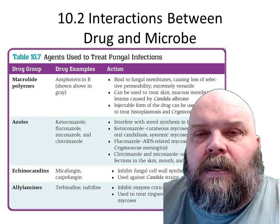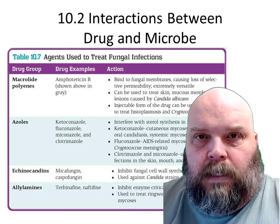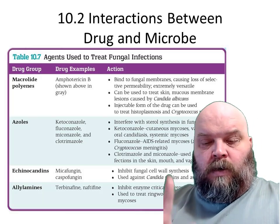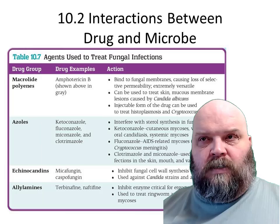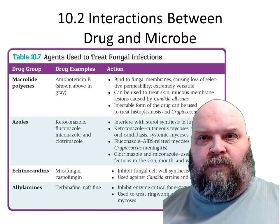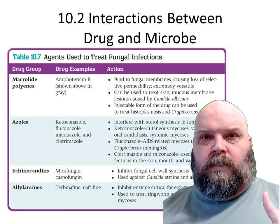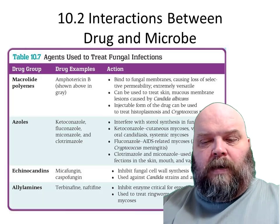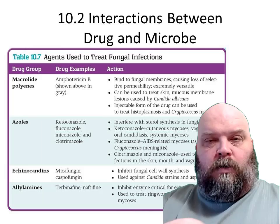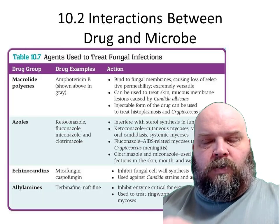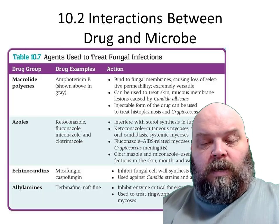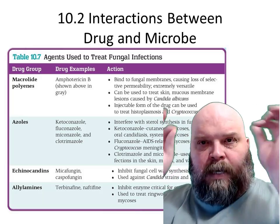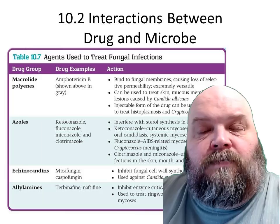Amphotericin B is topical only. So if you have a fungal skin infection — whether it's athlete's foot, crotch rot, whatever — Amphotericin B will be a cream you put on the surface. The cream will slowly diffuse through the epidermis to the outer layers of the dermis, and that's as far as it will go.